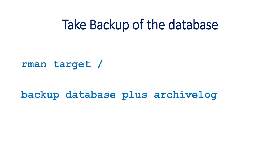First, if you don't have a backup you need to take one. You can take a differential level zero or level one backup, or different types of backup based on your choice. In this tutorial, after connecting to RMAN, we will use a command that takes the backup of the database along with the archive log backups.